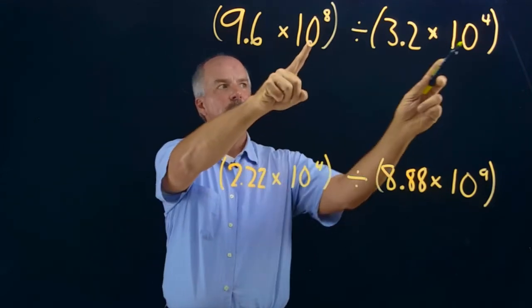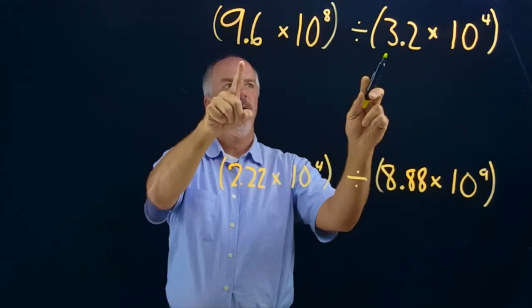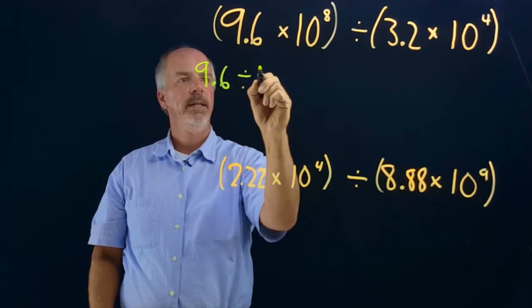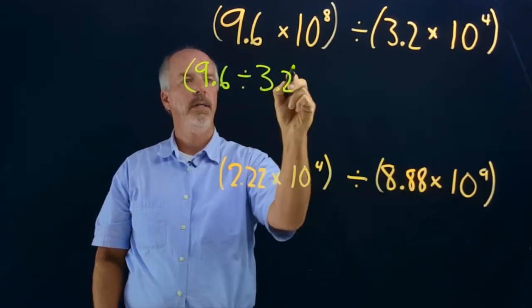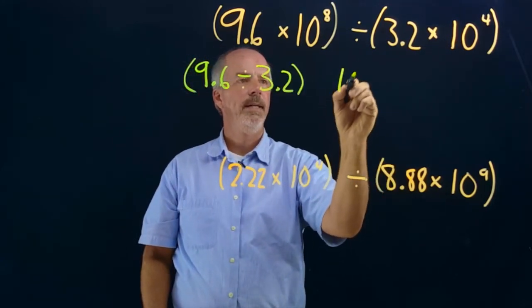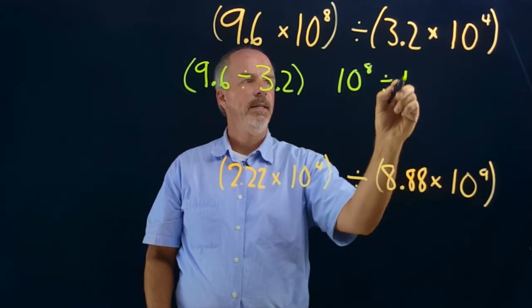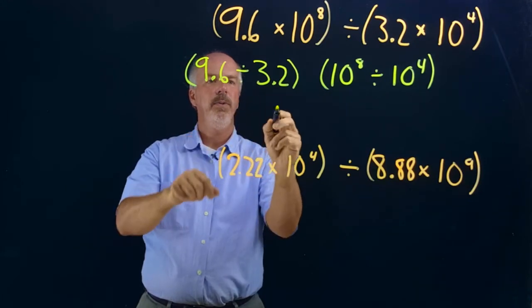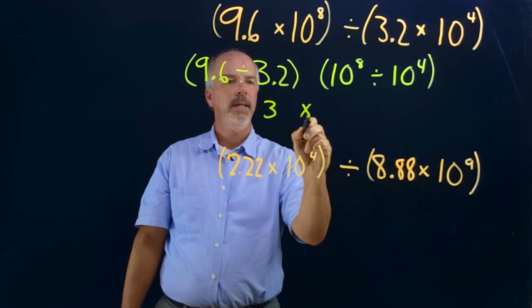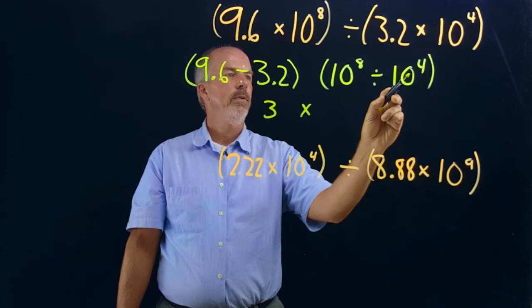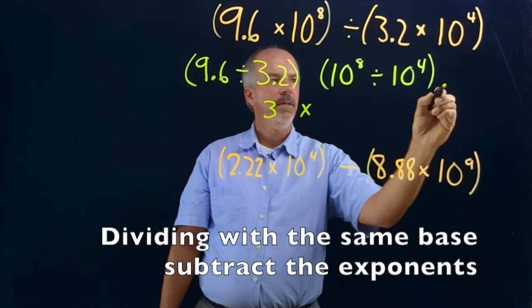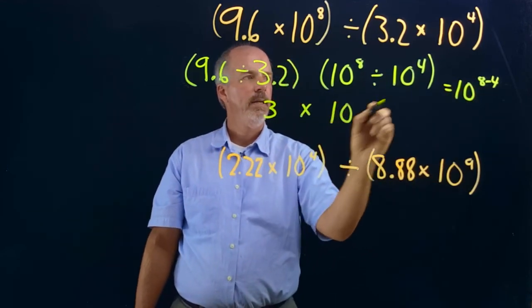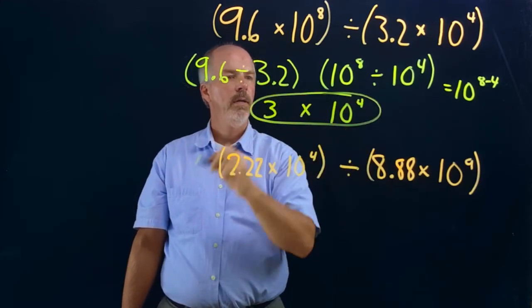Now let's look at division. In division with scientific notation, like multiplication, we're not worried about the powers of 10 being the same. We start with our coefficients: 9.6 divided by 3.2, and then 10 to the 8th divided by 10 to the 4th. When we divide 9.6 by 3.2 we get 3. And when we divide exponents with the same base, we subtract — so that's 10 to the 8 minus 4.